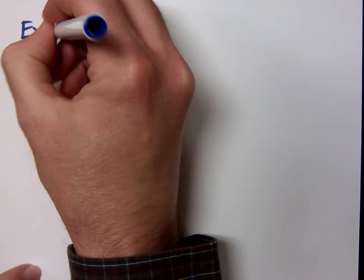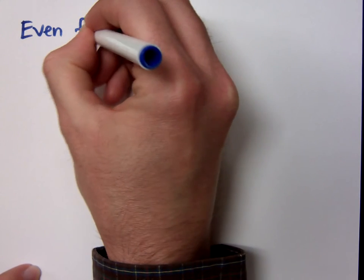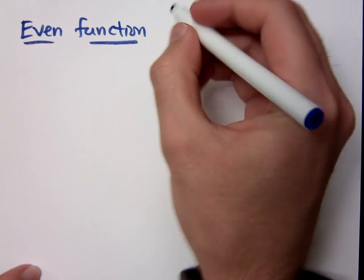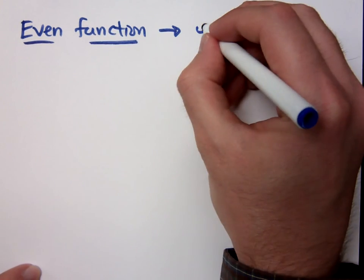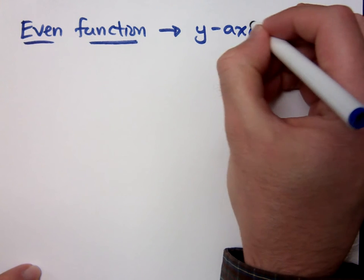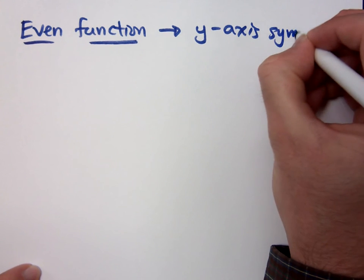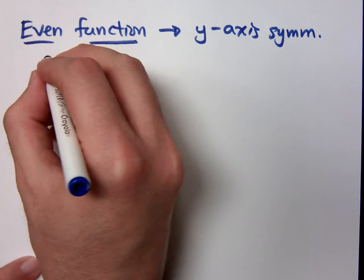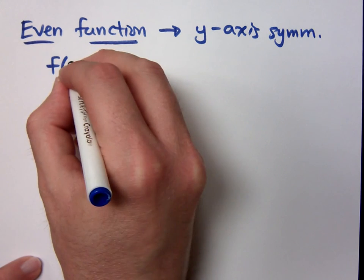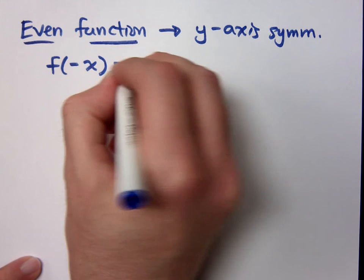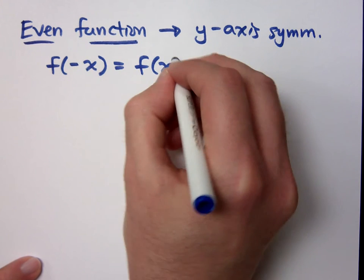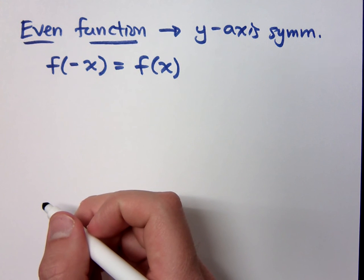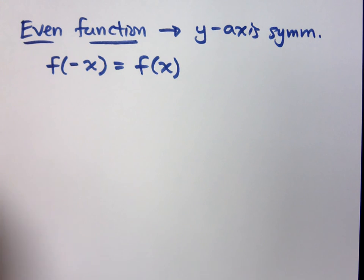For an even function, that means we're talking about something that has y-axis symmetry. It also means that f of negative x is equal to f of x. That's what you have for an even function.